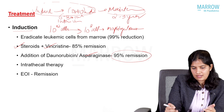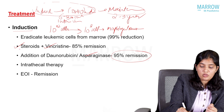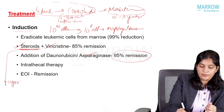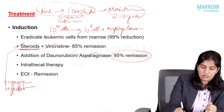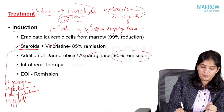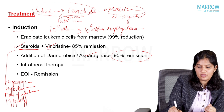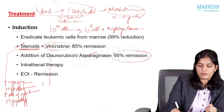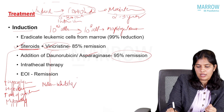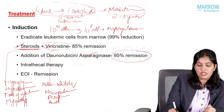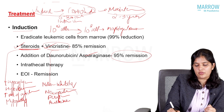Each chemotherapeutic agent has peculiar effects and side effects. Steroids are the important backbone for leukemia treatment; common side effects include hyperglycemia, hypertension, increased risk of infection, and myopathy. We must monitor blood sugars and blood pressure and be careful about infections. Vincristine is a mitosis inhibitor; its peculiar side effect is neuropathy — either peripheral neuropathy or autonomic neuropathy.